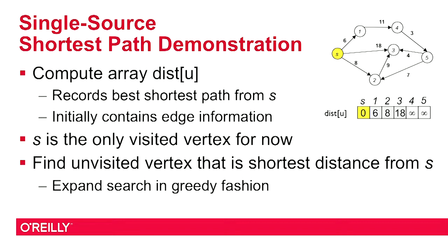That source vertex has three edges emanating from it to three different vertices. I'm going to create an array called the dist array, for distance, that keeps track of the best cost that we've computed to date from the source vertex to the other vertices in the graph. Initially, that dist matrix will contain only information from the original edge set. The dist entry for the source vertex will remain zero, because there is no way to get from S back to itself. I will populate the values of the dist matrix with the edge weights associated with the corresponding edges. That's why you see 6, 8, and 18 appear as the first few values in the matrix.